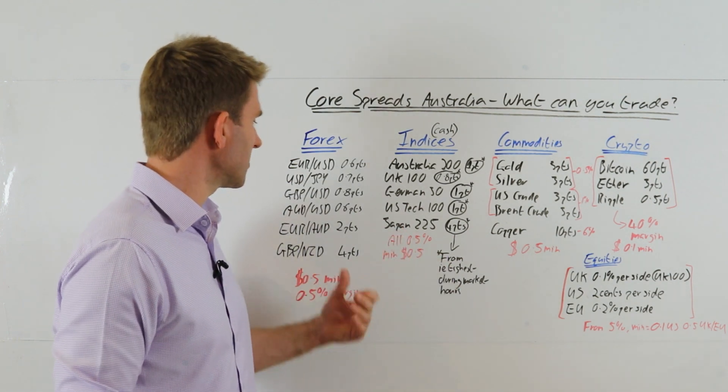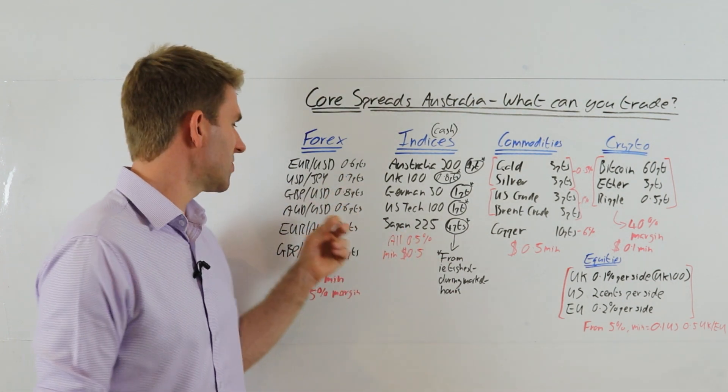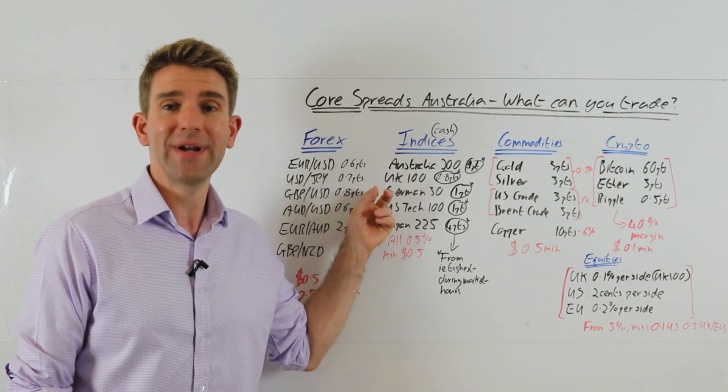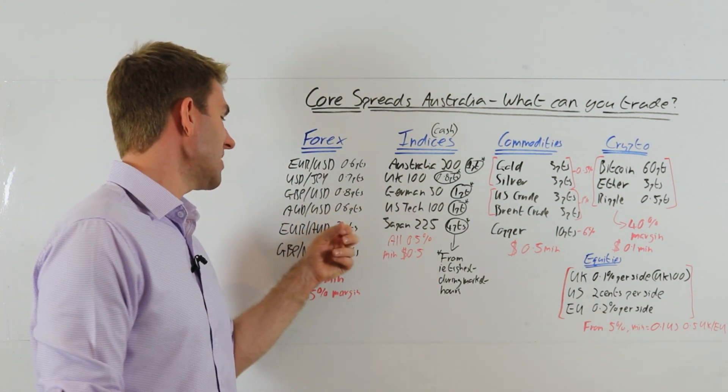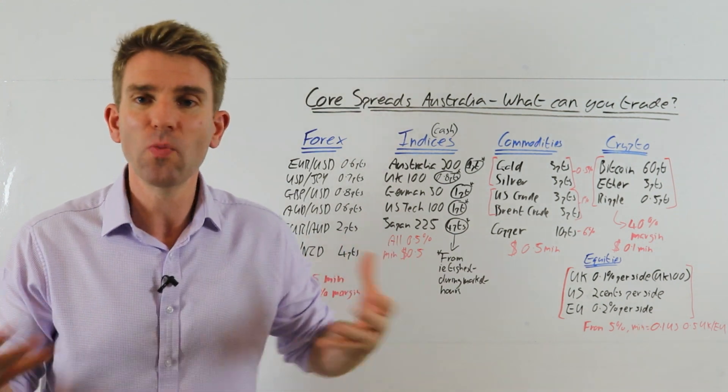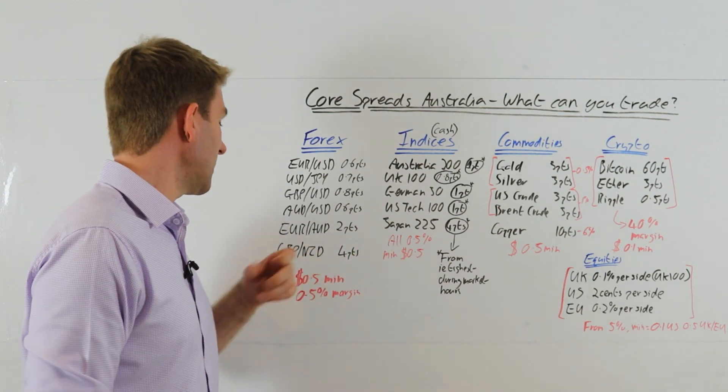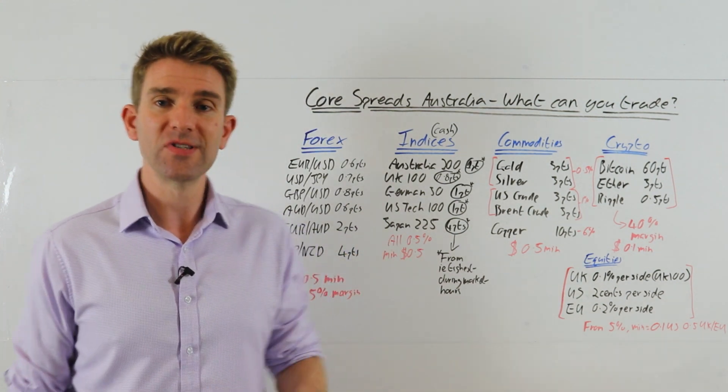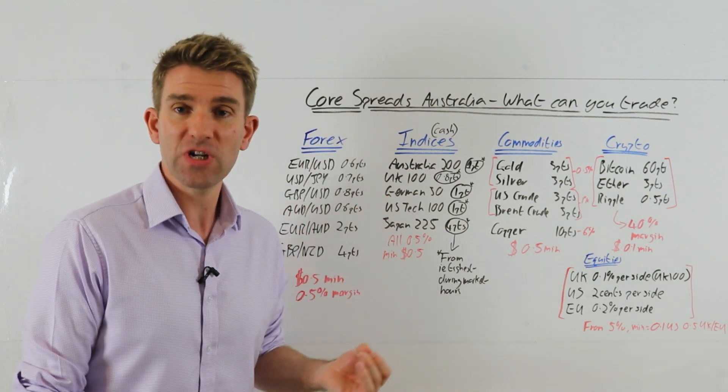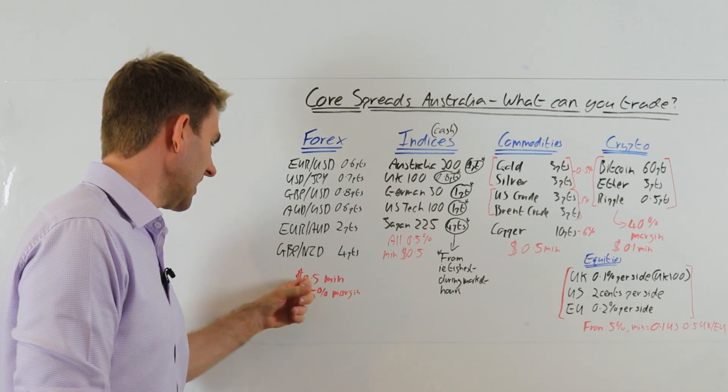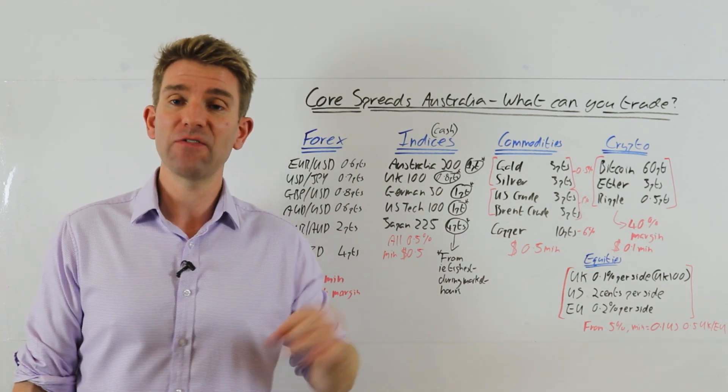If there's a specific pair that you like to trade, go and download the market information sheet and see what the updated spread is. Broadly speaking to give you an idea: EUR/USD, super popular of course, 0.6 points nice and tight. USD/JPY 0.7, GBP/USD is 0.8, pretty good again. AUD/USD 0.6, EUR/USD 2 points. And just thrown one out there, a bit of an odd one, GBP/NZD is 4 points.